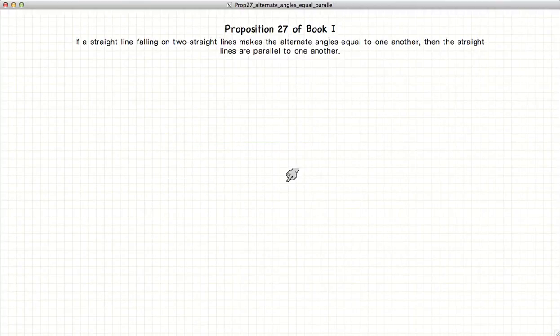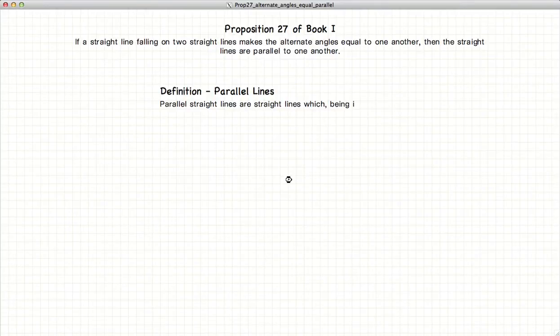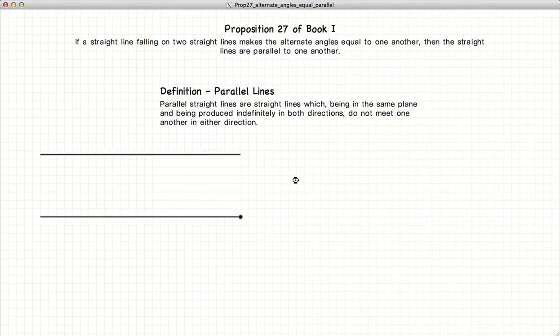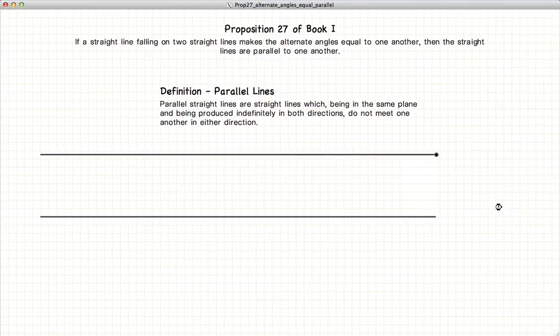So, before we begin, let's start with some definitions. Parallel lines, if you have two straight lines that continue on indefinitely, forever and ever, they never cross.